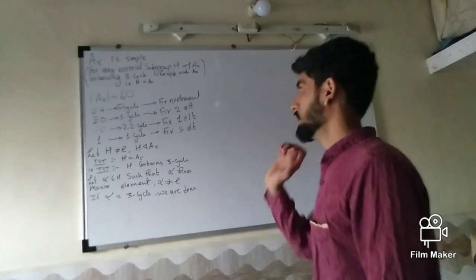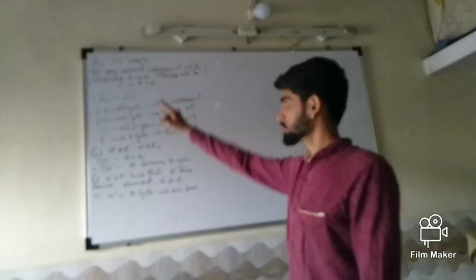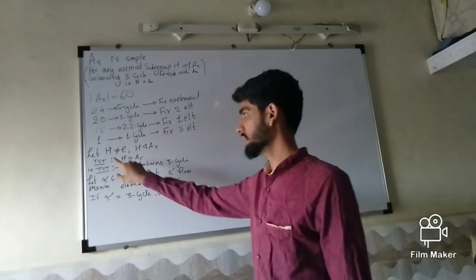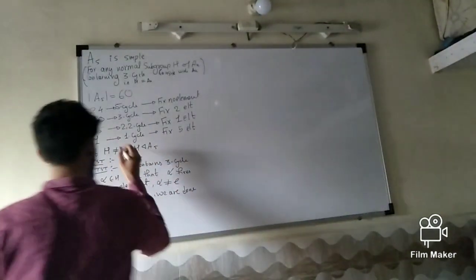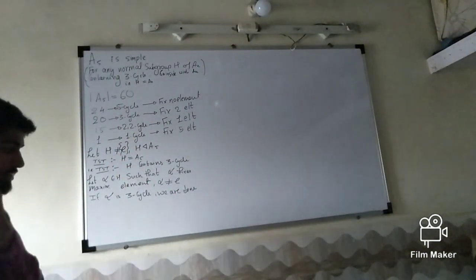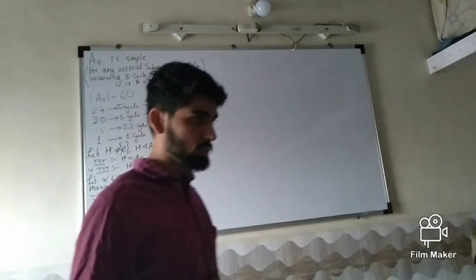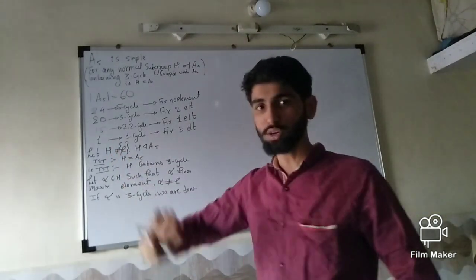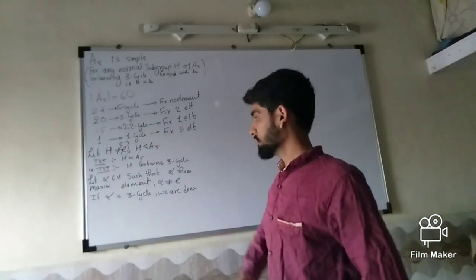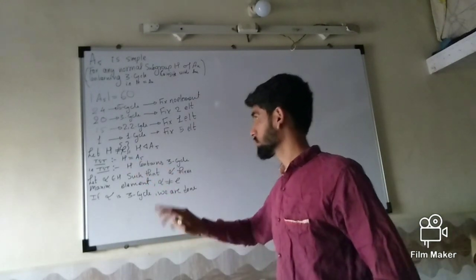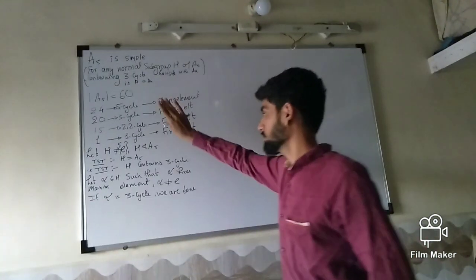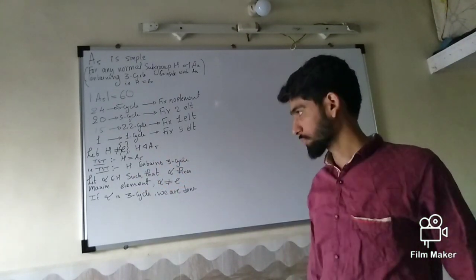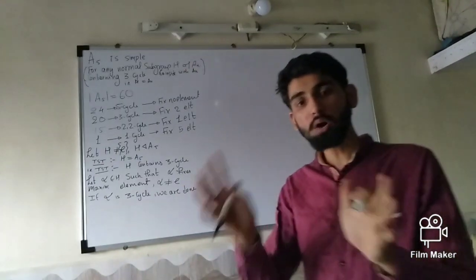Now we start the proof. We want to show A5 is simple. Take any normal subgroup H of A5 such that H is not just the identity. We are not talking about the trivial case. H is a normal subgroup of A5, and our claim is that H must equal A5. By the result we stated, it suffices to show H contains a 3-cycle. So our aim is to construct a 3-cycle inside H.